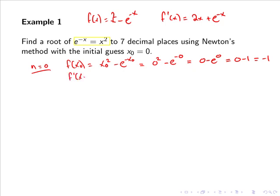And now f dash of x0 equals 2 times x0 plus e to the minus x0. So 2 times 0 plus e to the minus 0, so 0 plus 1 or simply 1.